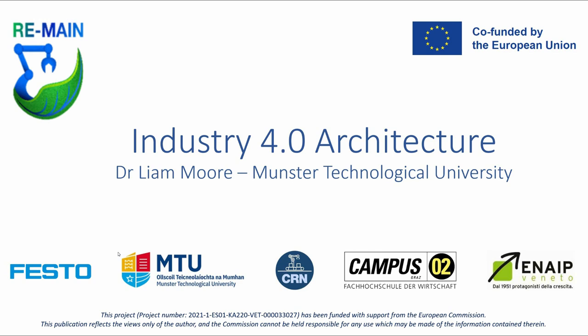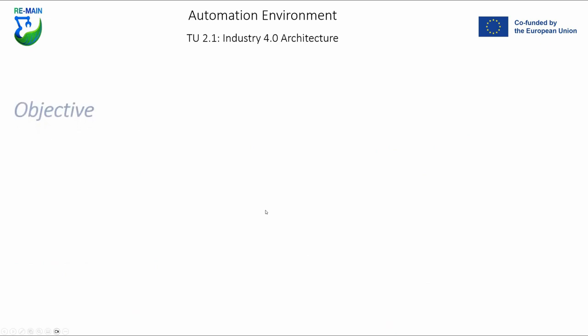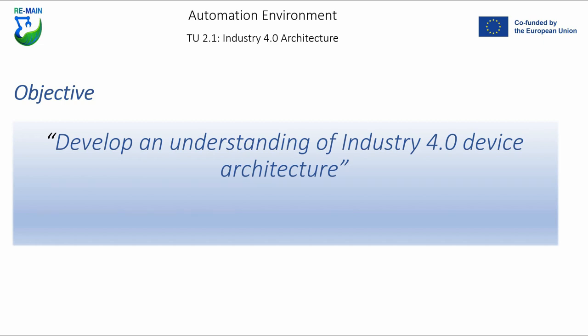We are now going to look at Industry 4.0 architecture — this is training unit 2.1 under training unit 2, the automation environment. The objective here is to develop an understanding of Industry 4.0 device architecture. When we talk about architecture in this scenario, we are referring to the design and structure of the systems and networks used to manage and control industrial processes and critical infrastructure.